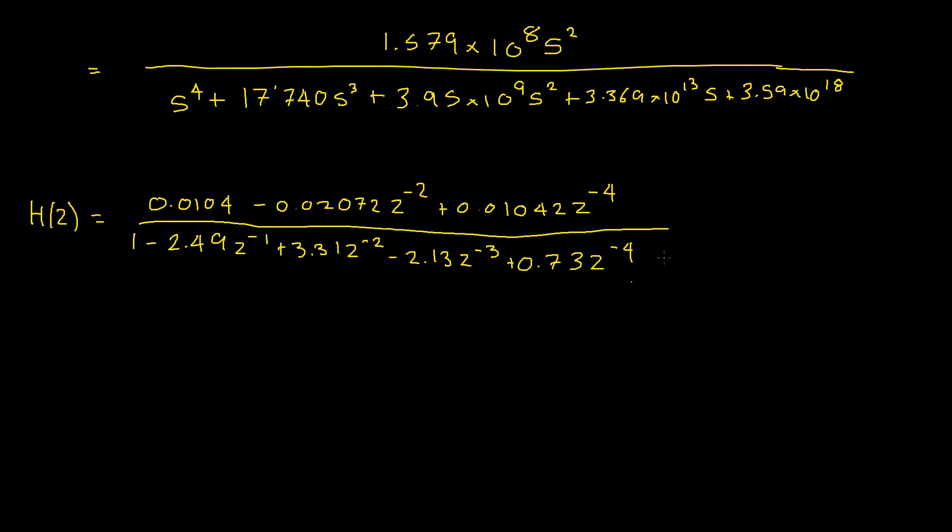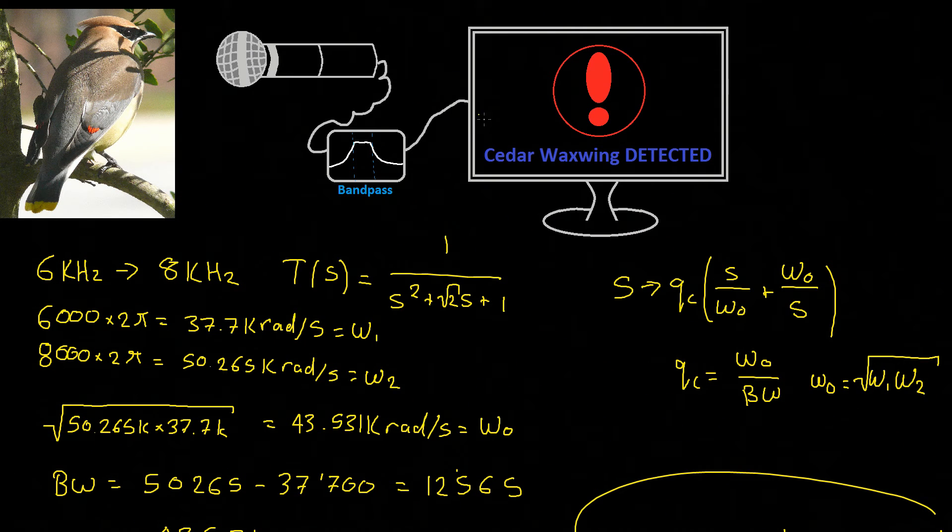And there we have it. We've got our digital frequency response. We can now go generate some software, chuck that into our computer, leave our microphone recording somewhere, and detect whenever there is a Cedar waxwing within range. And happy days!